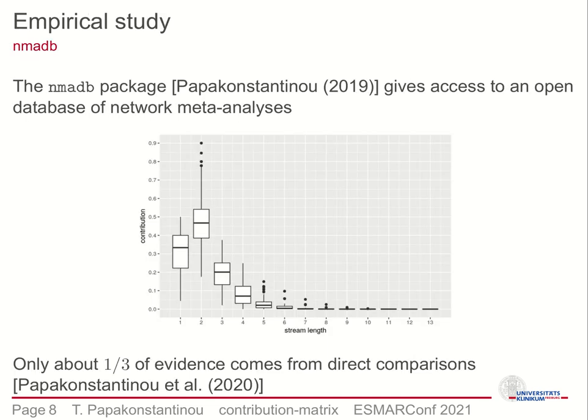I would also like to introduce the NMADP R package, which gives access to the database of network meta-analysis curated by ISPM Bern in Switzerland and the University of Ioannina, Greece. Through NMADP you gain access to 213 published networks, a number which is expected to rise since the database is currently being updated. The plot here is an application of the contribution matrix to the database and shows the distribution of the contribution of streams by length. The direct contribution — meaning streams of length 1 — is only about a third, while streams of length 2 contribute significantly more on average in the corpus of networks examined.